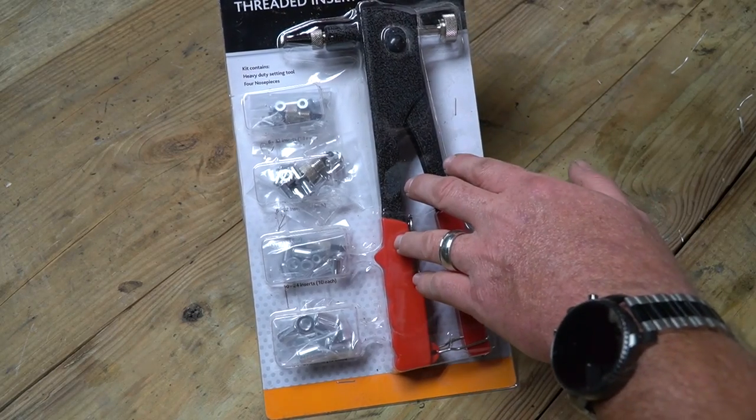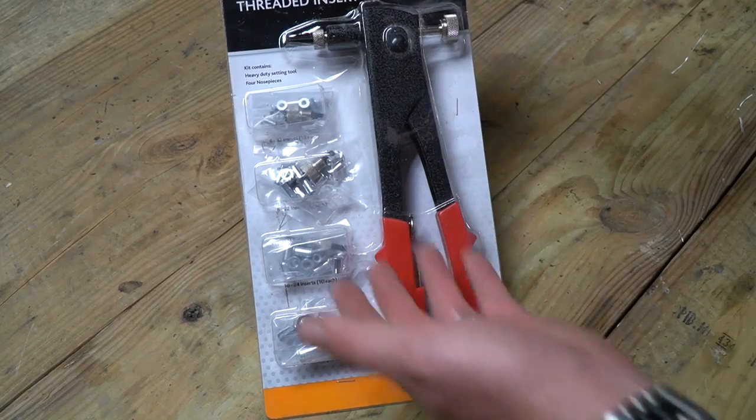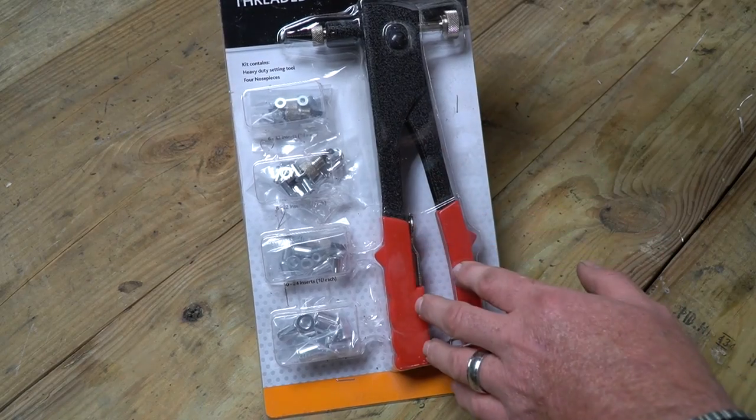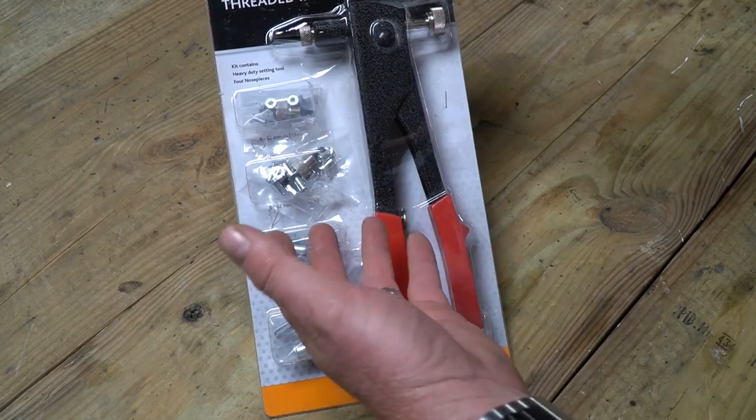This particular model I believe came from Harbor Freight. The one we're going to be using in the video came from Menards. They're both equally as good, it's just Menards has the sizes that we're going to be working with today. So something you want to keep in mind when you're buying one, make sure to handle the size of nut or receiving rivet that you need.